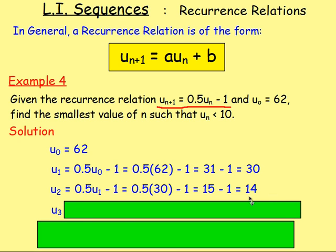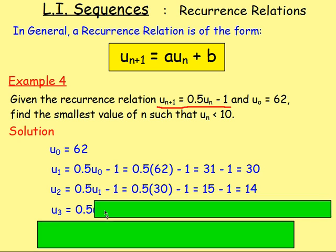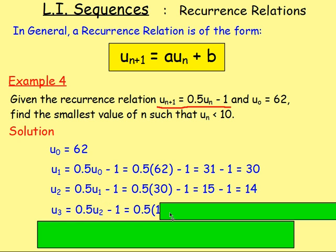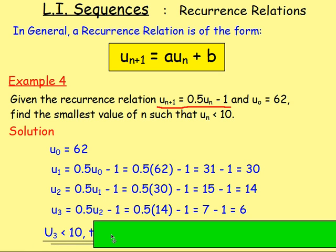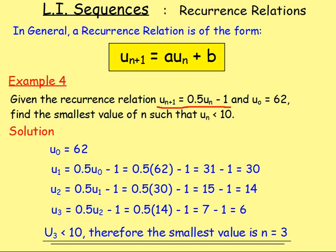After that, for U3, we'd have to keep on going because it's not less than 10. So U3 would be 0.5 times the previous term, U2, and then take away 1, which is going to be 0.5 times 14, take away 1, which works out to be 7 minus 1, which is 6. From that, then, well, U3 would be 6, and it's less than 10. It's the first term that is less than 10. So we can say that U3 is less than 10. Therefore, the smallest value of N is going to be 3. If you went on to work out U4, obviously it still would be smaller than 10, but the value of N would be more than that. We want the smallest value of N. So the smallest value of N would be 3, to give us something less than 10.